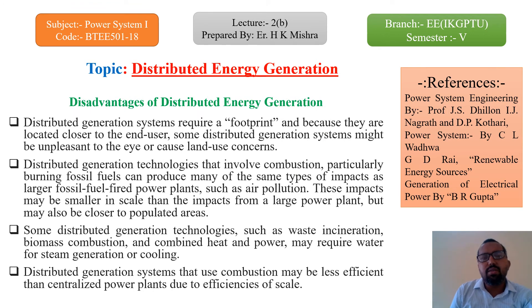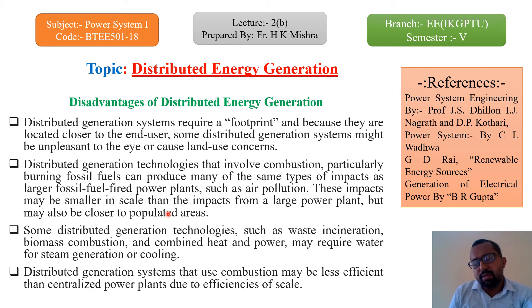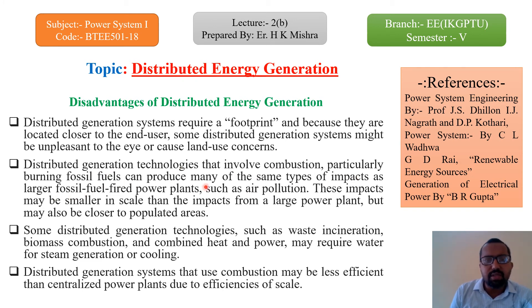The disadvantages of distributed energy generation: first, distributed generation systems require a footprint, and because they are located closer to the end user, some systems might be unpleasant to the eye or cause land-use concerns. For example, wind power plants produce noise that is totally unpleasant when your home is located near the wind power plant. Second, distributed generation technologies that involve combustion, particularly burning fossil fuels, can produce many of the same types of impacts as larger fossil fuel-fired power plants, such as air pollution. These impacts may be smaller in scale but closer to populated areas.